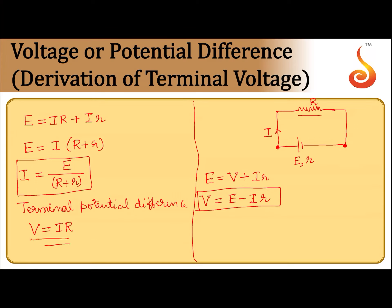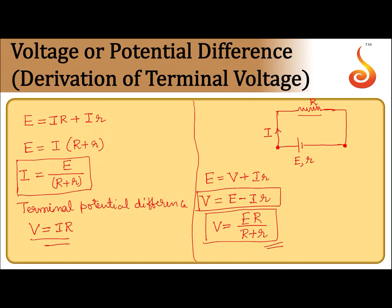Alternatively, substituting for I, we get V equals E times R divided by (R + r). This is the second expression for terminal potential difference. If you know only EMF, external resistance, and internal resistance, use this form. Clearly, whenever current is drawn from the cell, the terminal potential difference will be less than the EMF of the cell.